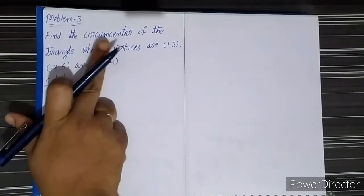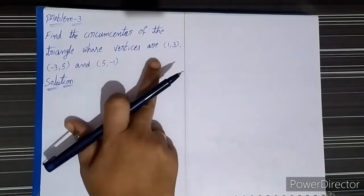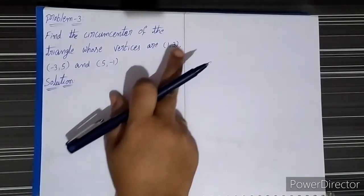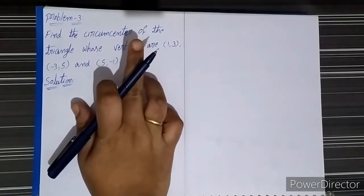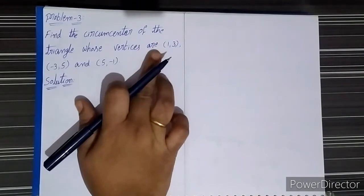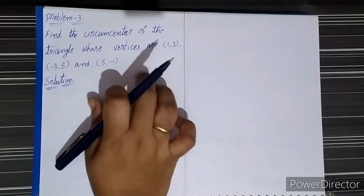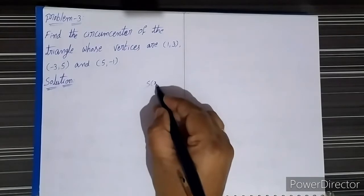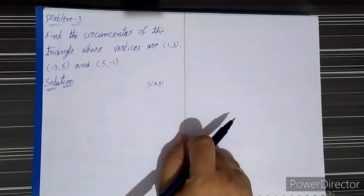In this problem we have to find out the circumcenter of the triangle. For finding the circumcenter, we are given the vertices of a triangle. Let these vertices be A, B, C. We know that if A(x1, y1), B(x2, y2), and C(x3, y3) are the vertices of a triangle, and the circumcenter is denoted by S, S(x, y) is the circumcenter of triangle ABC.